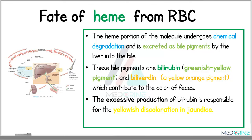The heme portion of the hemoglobin molecule undergoes chemical degradation and is excreted as bile pigments by the liver into the bile. These bile pigments are bilirubin, which is a greenish-yellow pigment, and biliverdin, which is a yellow-orange pigment. Bilirubin and biliverdin contribute to the color of the feces, and the excessive production of bilirubin is responsible for the yellowish discoloration known as jaundice.